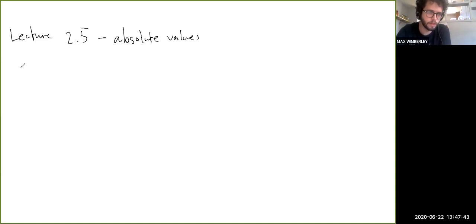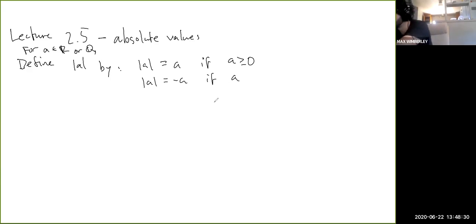So we'll define for a in R or Q. Again, we're doing a lot of these definitions before we've really defined what R is, but just try to ignore that. Define the absolute value of a by the rule: if a is greater than or equal to zero, the absolute value of a is just itself, and a equals negative a if a is less than zero.